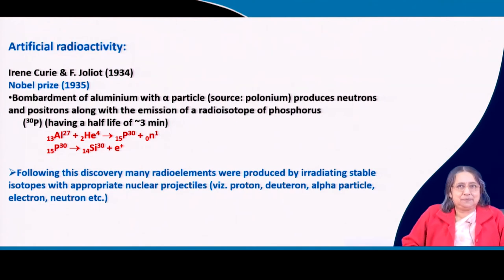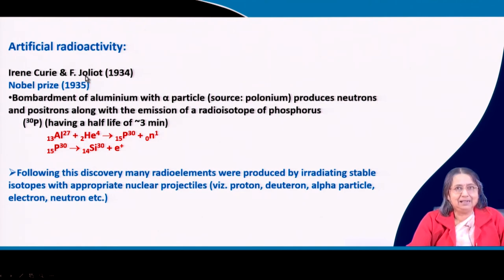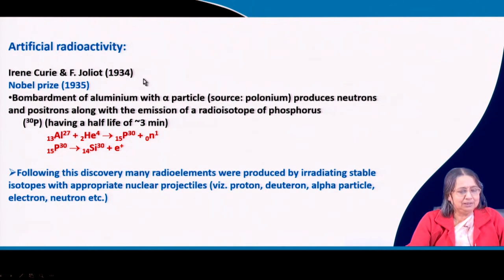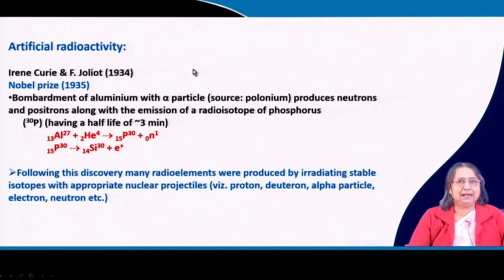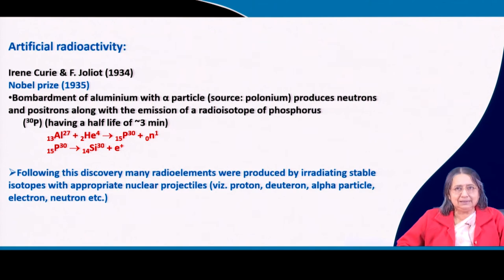Another important experiment was by Irene Curie — the daughter of Madame Curie — and her husband F. Joliot. They were doing experiments related to the neutron. They received the Nobel Prize in 1935, not for neutron work but for artificial radioactivity. Until then, radioactivity was only seen spontaneously from heavy nuclei — natural radioactivity. This was the first demonstration of artificial radioactivity.